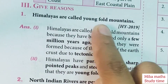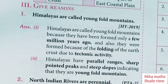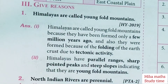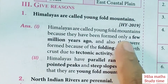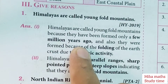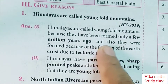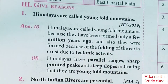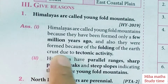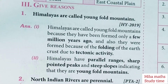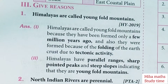Himalayas are called Young Fold Mountains. Why? I have to explain it in two points. Himalayas are called Young Fold Mountains because they have been formed only a few million years ago. They were formed because of folding of the earth's crust due to tectonic activities.